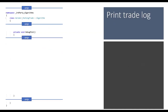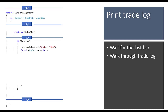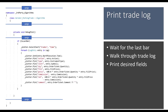For an option strategy we absolutely want a trade log. We wait for the last bar using the LastBar property, create a new chart called 'trades', loop through TuringTrader's trade log, and print desired fields. TuringTrader keeps a log of all executed orders accessible at any point.